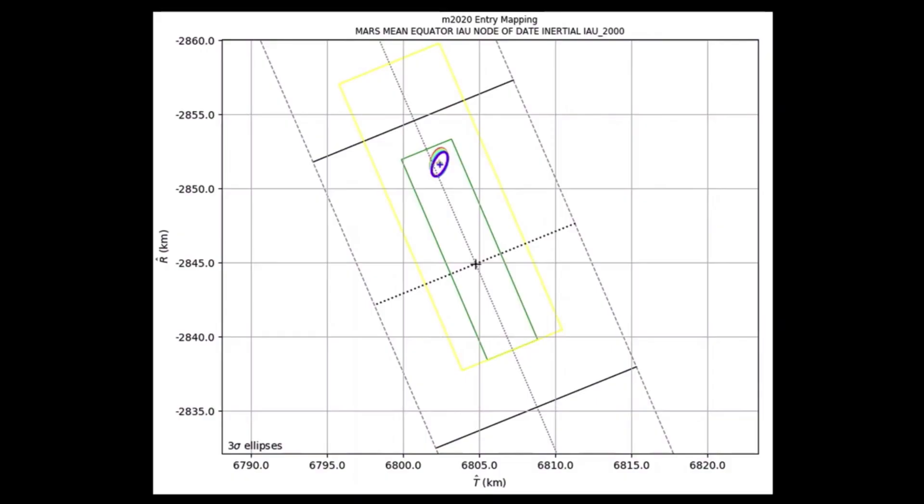If we're inside that green box, that green box is our bullseye. That's where we want to be, and anywhere in that area, the entry descent and landing system can finish the job of getting us down to Jezero Crater.